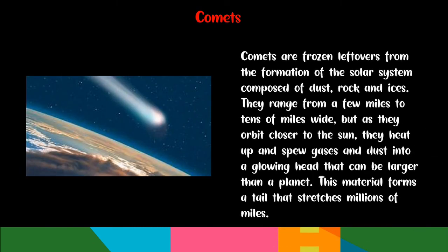Comets are frozen leftovers from the formation of the solar system, composed of dust, rock, and ices. They range from a few miles to tens of miles wide. But as they orbit closer to the Sun, they heat up and spew gases and dust into a glowing head that can be larger than a planet. This material forms a tail that stretches millions of miles.